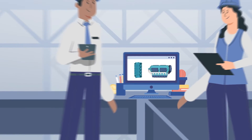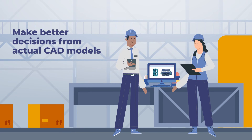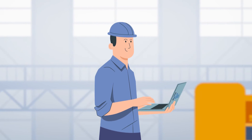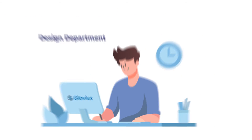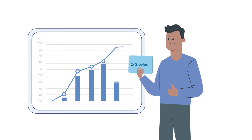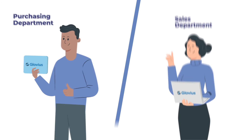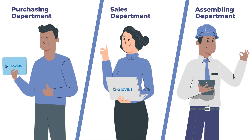Instant access to CAD data means you can take better decisions based on actual models and not snapshots. In an organization that chooses Glovius, employees could easily and quickly open and review 3D CAD designs of any file type. Efficiencies improved on the work floor, in purchasing, sales, and their service department. Their assembling department turned paperless with Glovius.